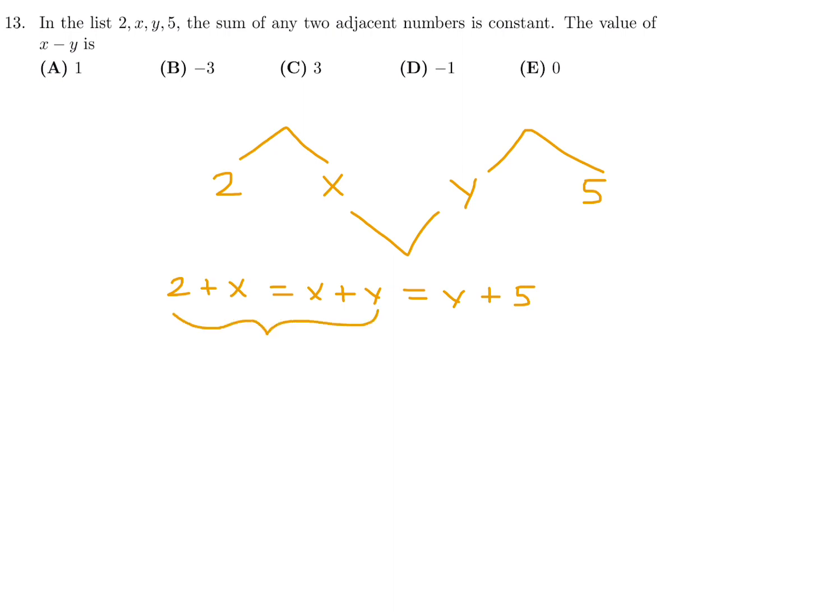From this equation, I basically get that 2 is equal to y, because the x's cancel. From that one, the y's cancel, and I get x is equal to 5. So I just have to now figure out x minus y. That's going to be 5 minus 2, which is 3. Number 13, the answer is C.